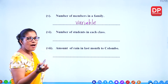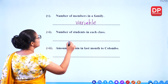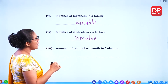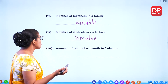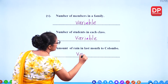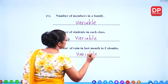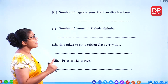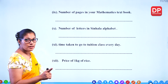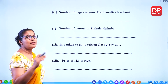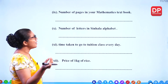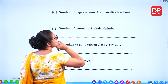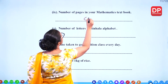Number of students in each class — yes, it varies, so that's a variable. Amount of rain last month in Colombo — it changes all the time, so that's a variable. Number of pages in your mathematics textbook — if you take the grade 6 textbook, there's a fixed number of pages, it's not changing from student to student, so that's a constant. Number of letters in the Sinhala alphabet — it has a fixed number, so it's a constant.